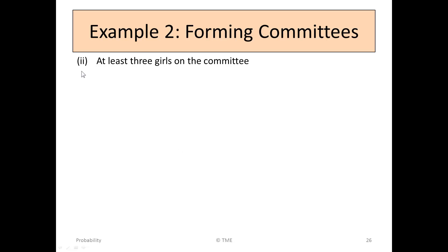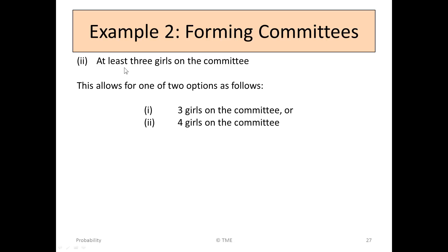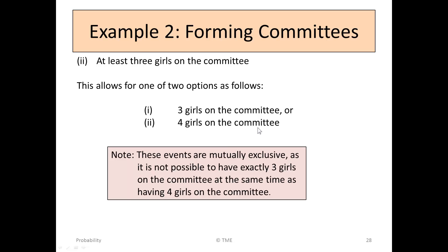We now look at the second condition: if we had to choose at least 3 girls for the committee. 'At least' means 3 or more — greater than or equal to 3. In this case, because we're only choosing up to 4 on the committee, at least 3 means either 3 girls on the committee or 4 girls on the committee. These two outcomes are mutually exclusive, because you can't have exactly 3 and exactly 4 at the same time, so you can add the numbers of combinations.